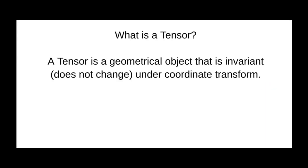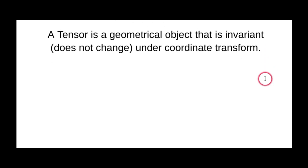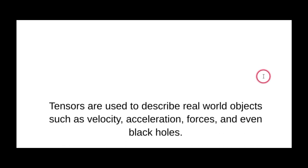Okay, here we go. This is video number one: what is a tensor? A tensor is a geometrical object that is invariant — does not change — under a coordinate transform. This is my favorite definition of a tensor. It's okay if you don't know what this means; we will by the end. Tensors are used to describe real-world objects like velocity, acceleration, forces, and even black holes.